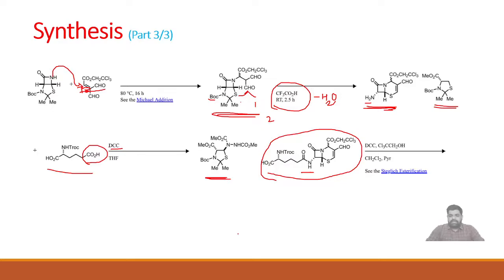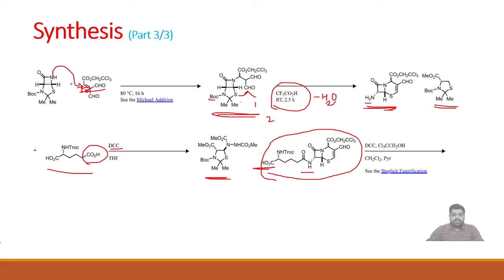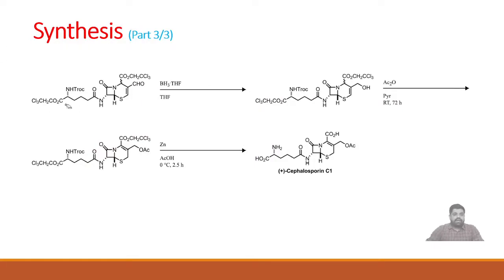This amide compound is carried for the next reaction, DCC and again 2,2,2-trichloroethanol reaction. Alcohol and acid couple together to form ester group. This COOH group is now esterified with this alcohol, giving this kind of ester.